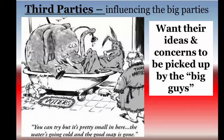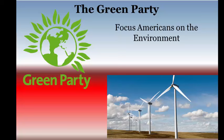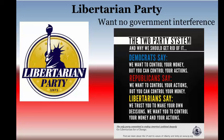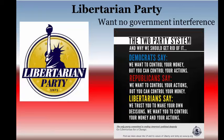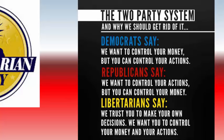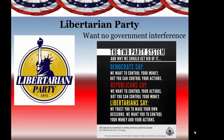The Green Party, as you could guess by the name, focuses on helping the environment, and they've definitely helped influence the political landscape as America becomes more environmentally friendly. Next is the Libertarians, a party that has grown in popularity. They want to extremely scale back the influence of the government and have had a lot of influence on Republicans, especially their faction known as the Tea Party. But Libertarians think Republicans are too much like Democrats. As their poster says: Democrats want to control your money but you can control your actions; Republicans want to control your actions but you can control your money. Libertarians say, 'We trust you to make your own decisions — we want you to control both your money and your actions,' giving you the liberty to do what you want without government involvement.